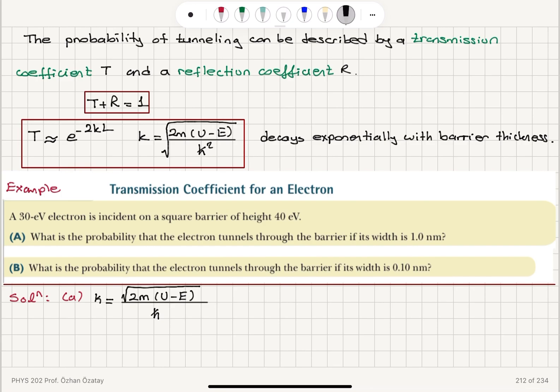Now if I substitute the numbers, I have 2 times the mass of the electron, 9.11 times 10 to the minus 31 kilograms. The potential energy is 40 electron volts, that's the barrier. We have a total energy of 30 electron volts, so 40 minus 30 times 1.6 times 10 to the minus 19 coulombs to convert it to joules.